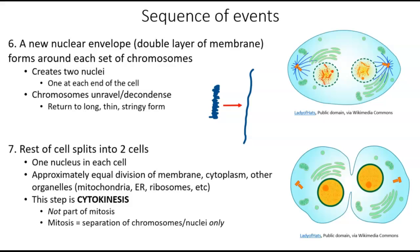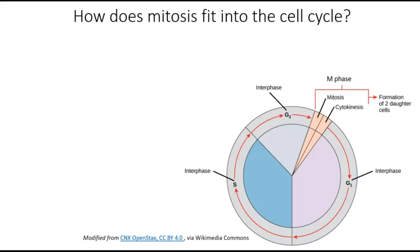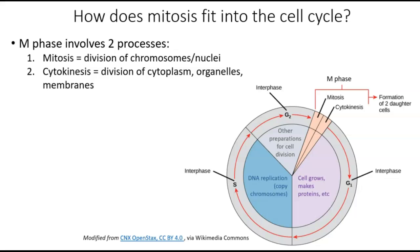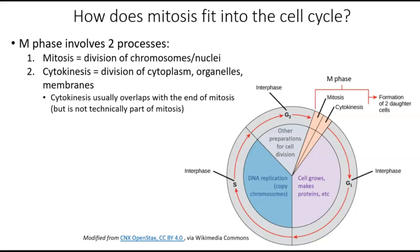One more thing to look at is how mitosis fits into the cell cycle. To do a quick review: new cells are created, then they go into the G1 phase where they grow, make proteins, and do all their regular cell functions. If a cell is given the go-ahead signal to divide, it will move into the S phase and perform DNA replication to copy all of its chromosomes. When done, it proceeds to the G2 phase to make other preparations for cell division, such as making more mitochondria and all the proteins it needs. Then finally it gets to the M phase, which involves two separate processes: mitosis — the division of the chromosomes and the nuclei — and cytokinesis — the division of the cytoplasm, organelles, and membranes. Cytokinesis usually overlaps with the end of mitosis, but it's not technically part of mitosis. Both processes are involved in the M phase when cell division happens.